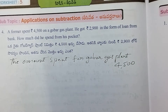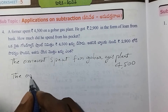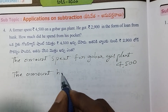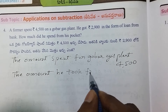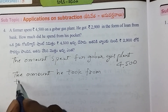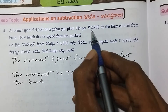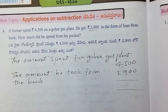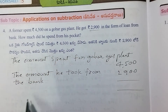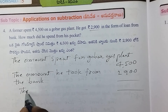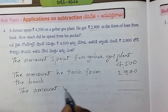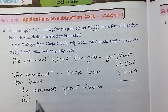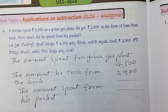The amount he took from the bank: he got $3,900 from the bank. The amount he spent from his pocket is to be calculated.